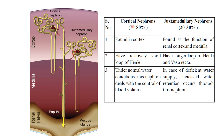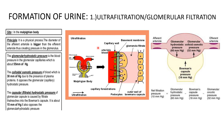There are two types of nephrons: cortical nephrons, which are 70–80% of the total and are found in the cortex, and juxtamedullary nephrons, which are 20–30% and are found in the medulla. Cortical nephrons have a relatively short loop of Henle. Under normal water conditions, these nephrons deal with control of blood pressure. Juxtamedullary nephrons have a long loop of Henle, and in cases of deficient water supply, increased water retention occurs through them.